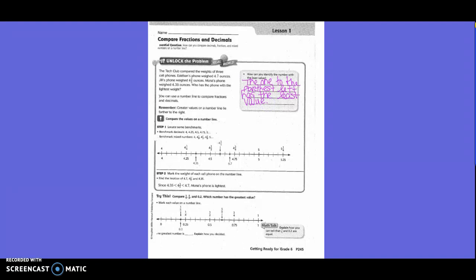Compare the values on the number line. Locate the benchmark decimals: 4, 4.25 hundredths, 4 and 5 tenths, 4.35 hundredths, 5 and so on are marked. Benchmark mixed numbers: 4 and 1 fourth, 4 and 1 half, 4 and 3 fourths and 5 are marked as well. So basically each benchmark decimal-wise goes up by 5 hundredths. They marked where 4.35 hundredths was, where 4 and 7 tenths was, and on top with the mixed numbers, where 4 and 3 fifths was.